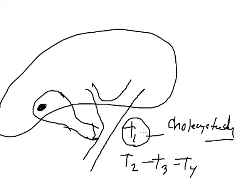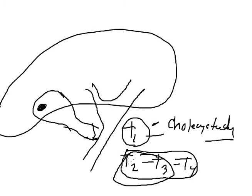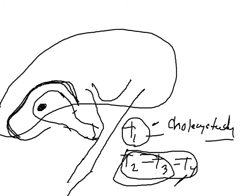For T2 and T3 lesions — T4 may or may not be operable — the operation that we perform is removal of segments 4-5 of the liver, which is basically taking a large chunk of the liver, in common with a portal lymph node dissection. Along this common bile duct there are a series of lymphatics, and what we do is completely skeletonize and clean up all the lymph nodes along the hepatic artery, along the common bile duct, and the portal vein.